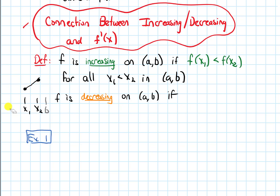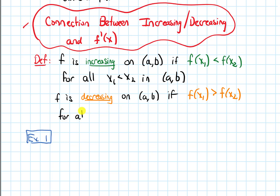Now the decreasing definition: f is decreasing on an open interval from a to b if f of x1 is greater than f of x2. So the y value at the first point has to be bigger than the y value at the second point, and that's got to be the case for all numbers x1 and x2 with x1 less than x2 in the open interval from a to b.